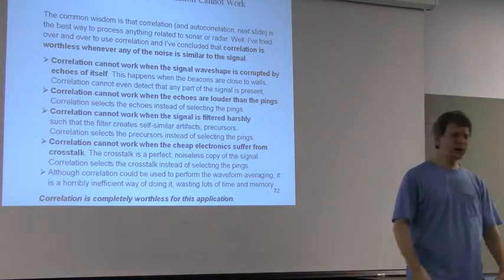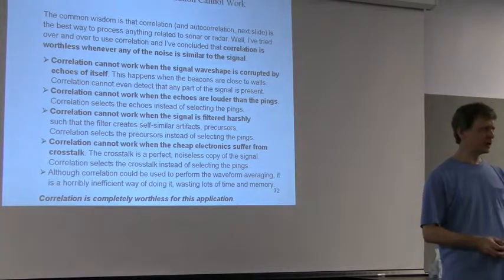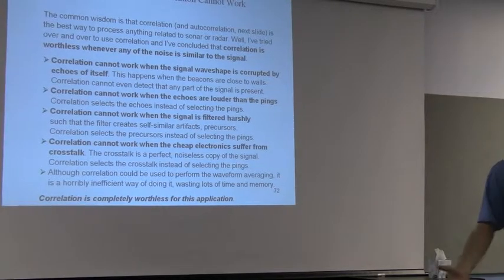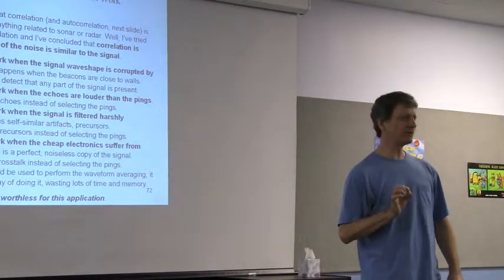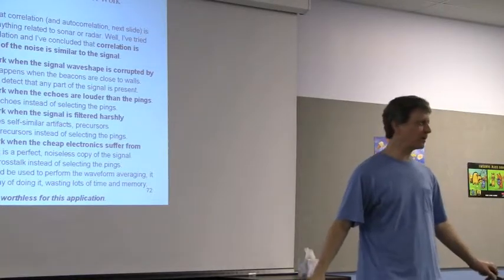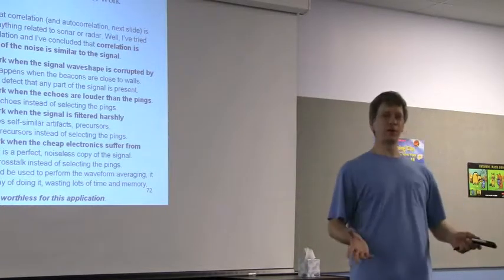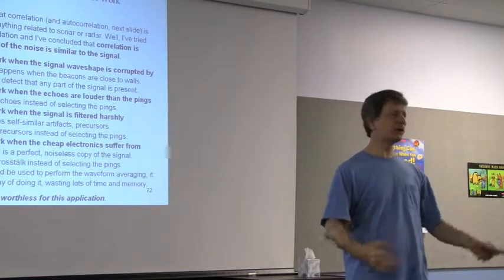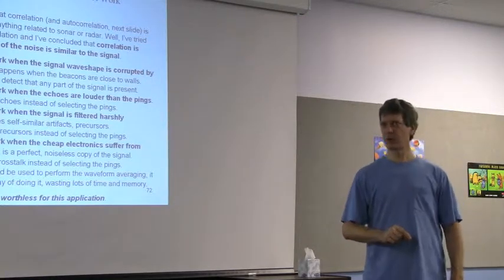Then correlation. Everybody says, John, just correlate this stuff. That'll solve your problem. You just need to be using correlation. Correlation won't work because the echoes are correlated with the ping. I don't want to trigger on the echoes. The crosstalk is a perfect copy of the ping with no noise. It's perfect. It gets a perfect correlation. I don't want to trigger on the crosstalk. If you filter it too harshly, the filter causes ringing. And the ringing is at the same frequency. So you trigger on that. So for this app, correlation is great for a variety of things, but not for this. It won't work for this.